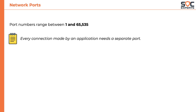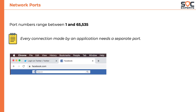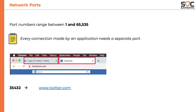We should note that every connection made by an application needs a separate port. For example, when a Chrome browser initiates two connections — one for Twitter and another for Facebook — it would need two different source ports. In this case, let's assume Chrome will get the port number 35,432 to connect to twitter.com and 25,439 to connect to facebook.com.